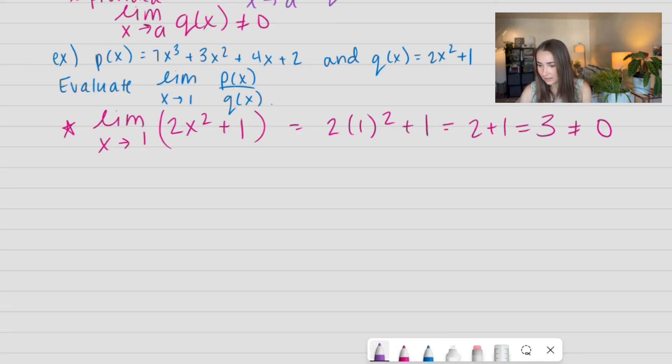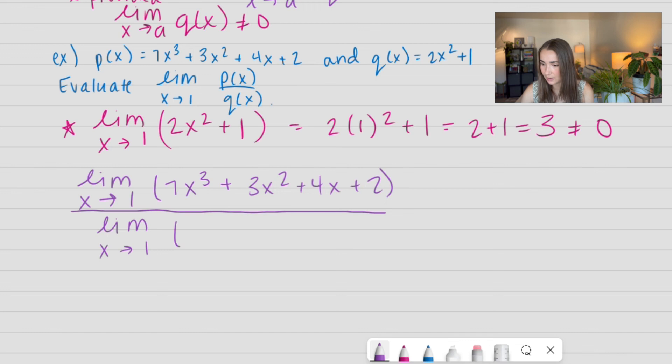So, I'm going to go ahead and take the numerator, the limit as X approaches 1 of parentheses, 7X cubed plus 3X squared plus 4X plus 2, and I'm going to go ahead and divide it by the limit as X approaches 1 of our denominator, 2X squared plus 1. We've already found what both of these equal. We found the numerator is equal to 16 and the denominator is equal to 3.